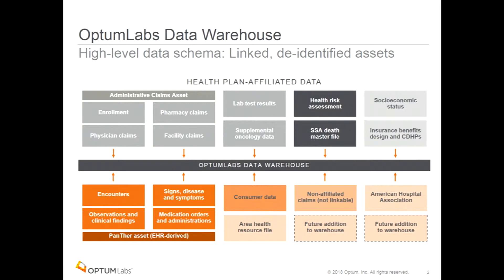Optum Labs has about 30 partners — academic institutions, nonprofits. HHS is a partner, and they can access the data through a virtual desktop environment. We don't ship out the data; it's accessed via tunneling into our environment.